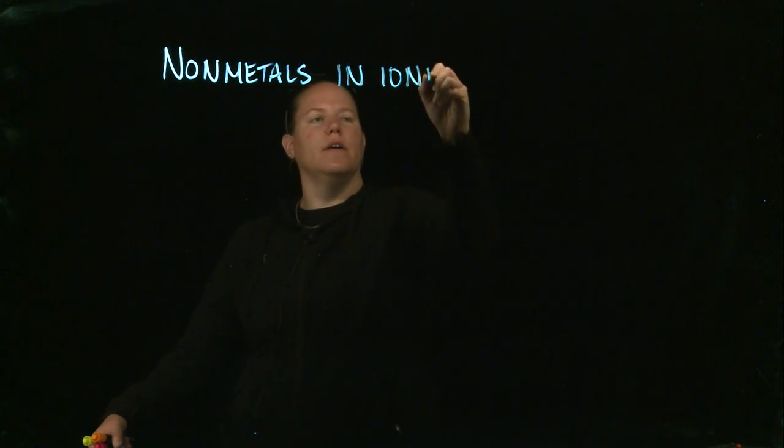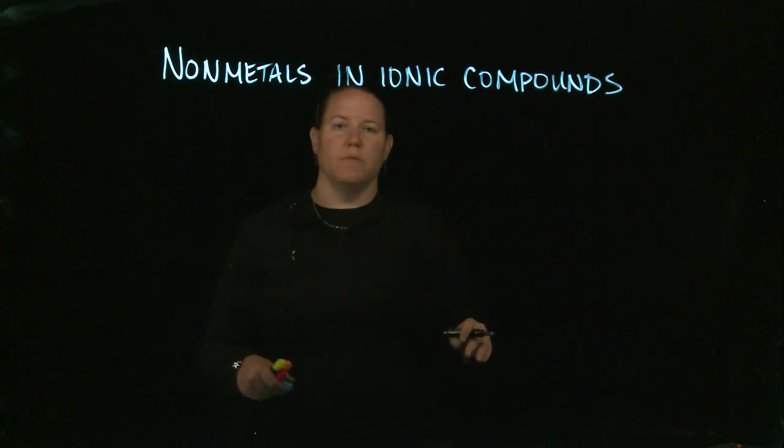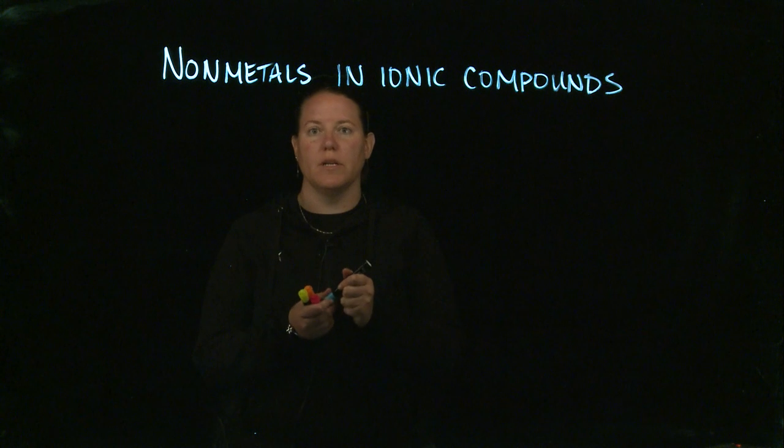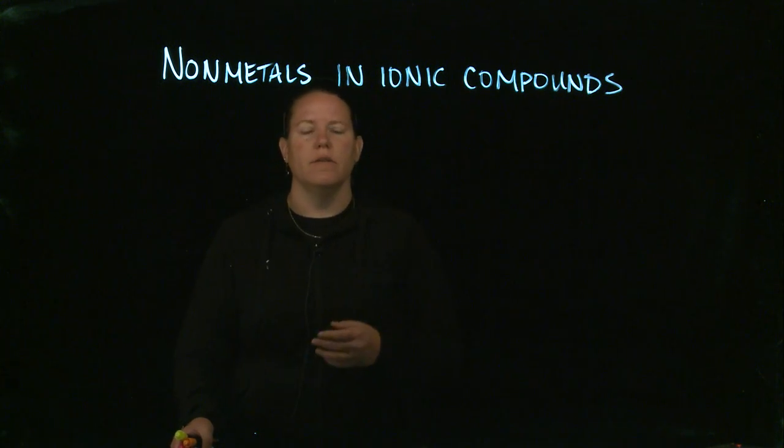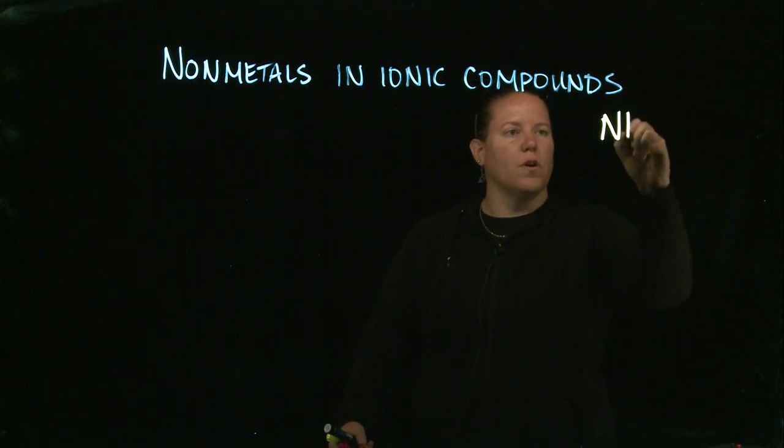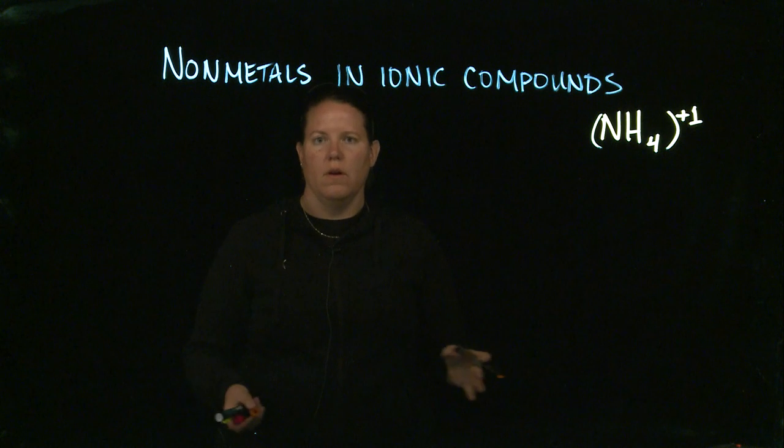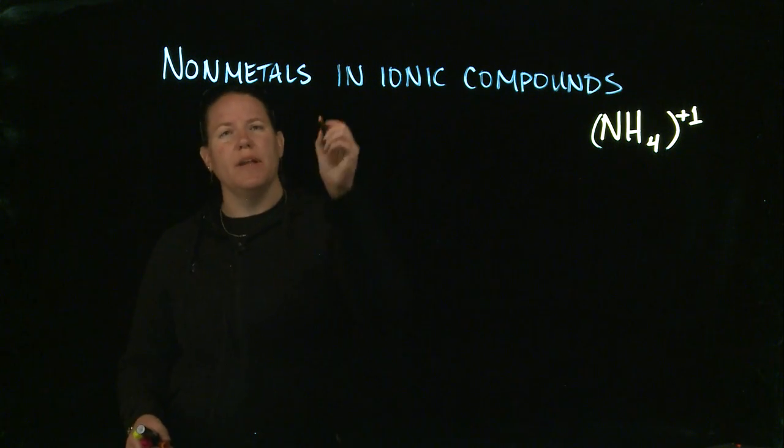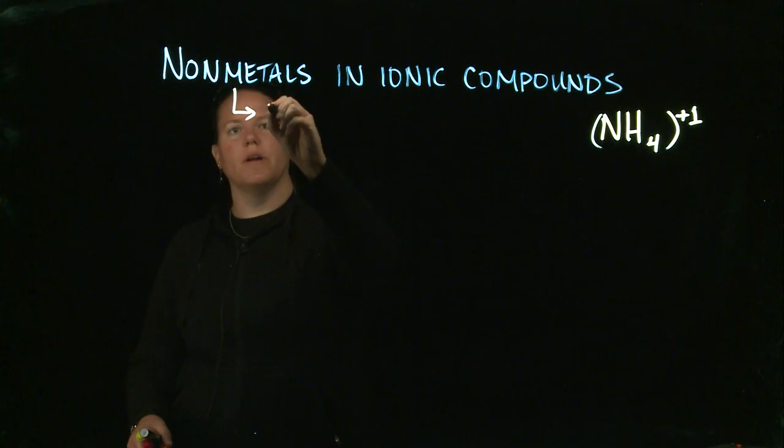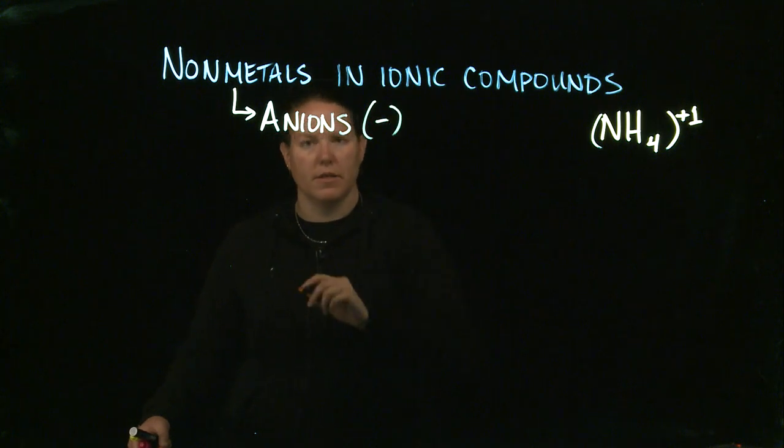Nonmetals in ionic compounds. In the previous video, we talked about the fact that there are two different kinds of metals in ionic compounds. For beginning chemistry, we think of ionic compounds as a metal plus a nonmetal, with the one exception of ammonium ions. The ammonium ion is a polyatomic ion, NH4 with a plus one charge. When we're talking about nonmetals in ionic compounds, for the vast majority of the time we're talking about anions. Remember, anion is an ion with a minus charge.